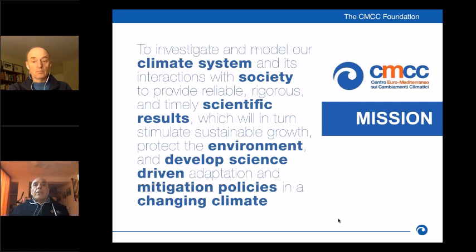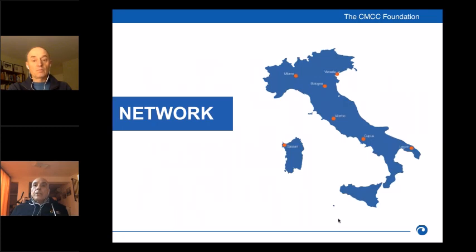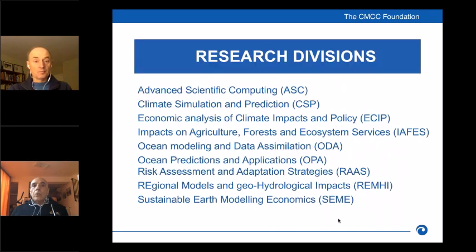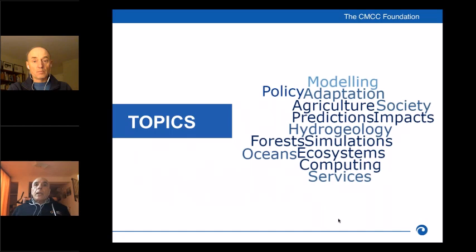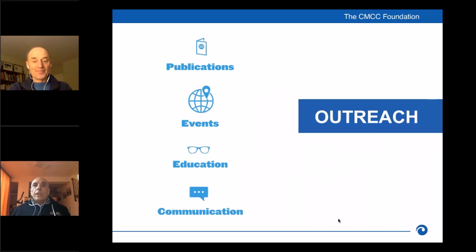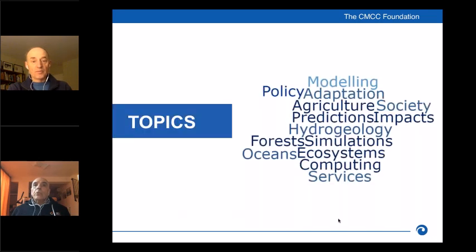As you can see from slides three, four and five, CMCC is made up of nine research divisions spread throughout Italy. These divisions cover different research subjects ranging from climate simulation and prediction to ocean modeling, scientific computing, and assessment of climate change impacts on our ecosystems. CMCC was established to act as a center of excellence on climate change in Italy.